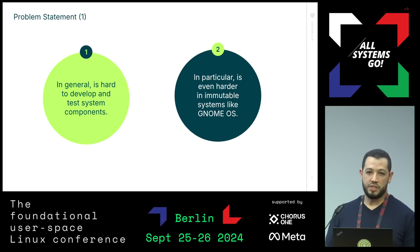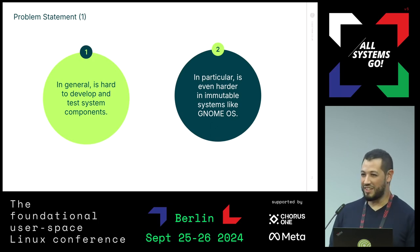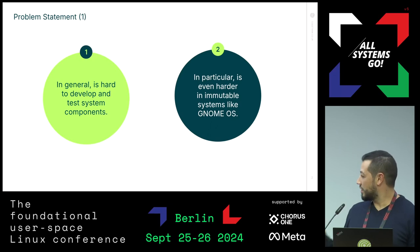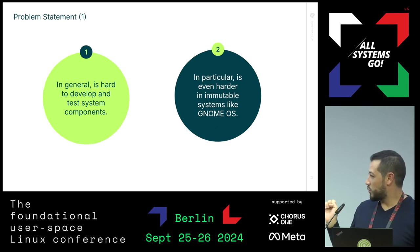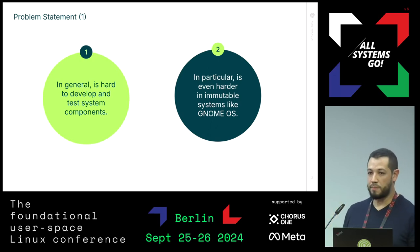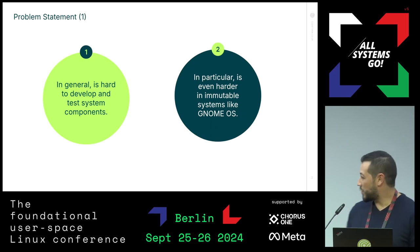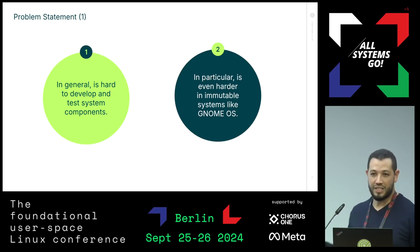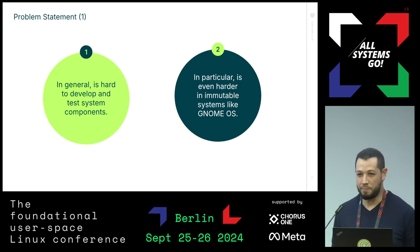With a mutable system, you could try to install directly on the system, or try to build a new version of the package and install it. But with immutable systems, such as GNOME OS, it's not possible.